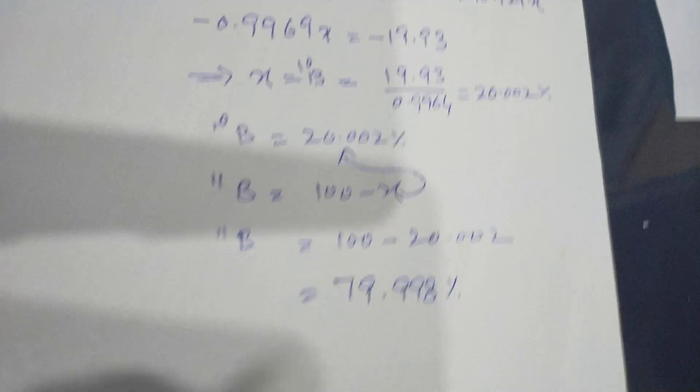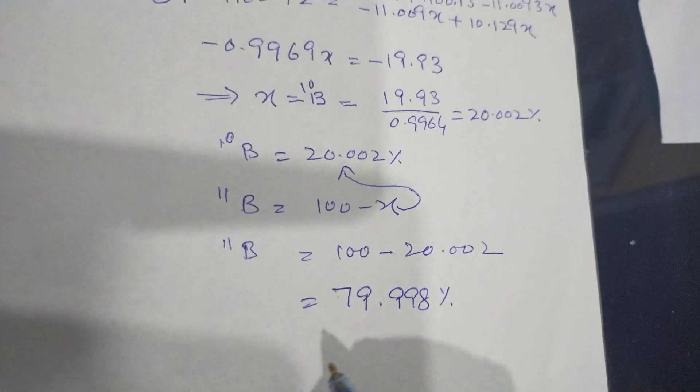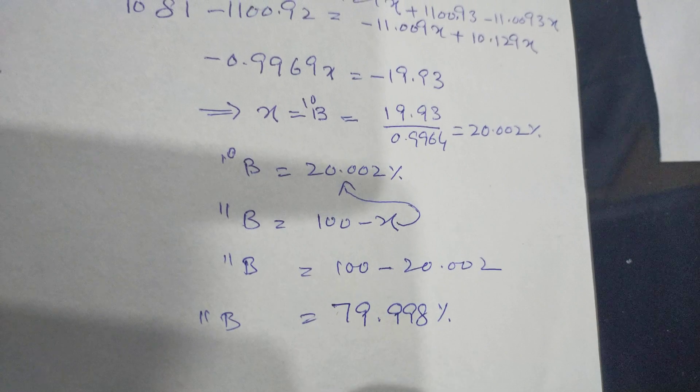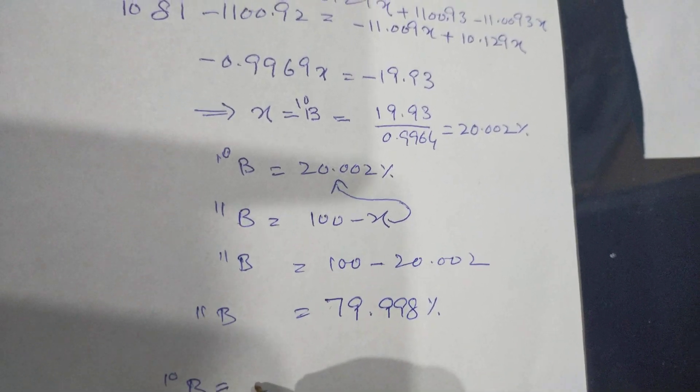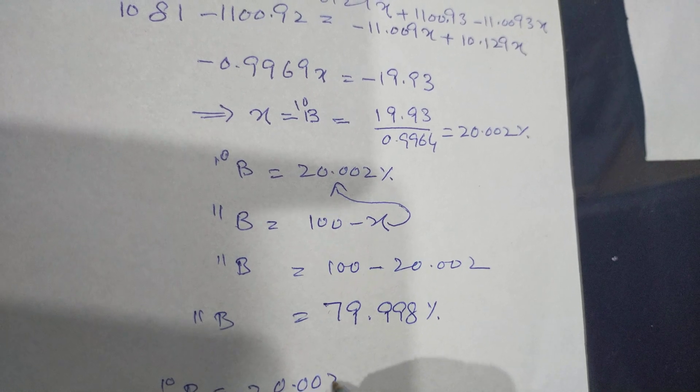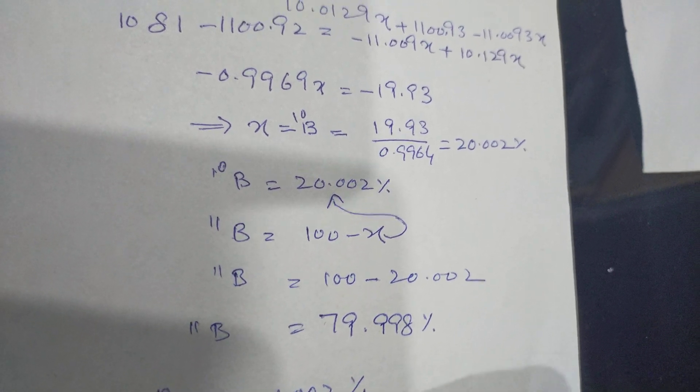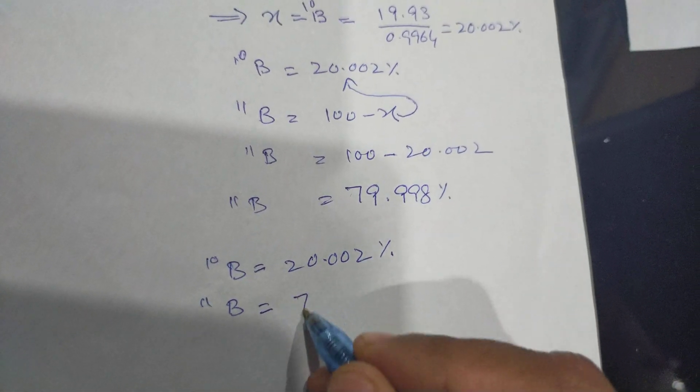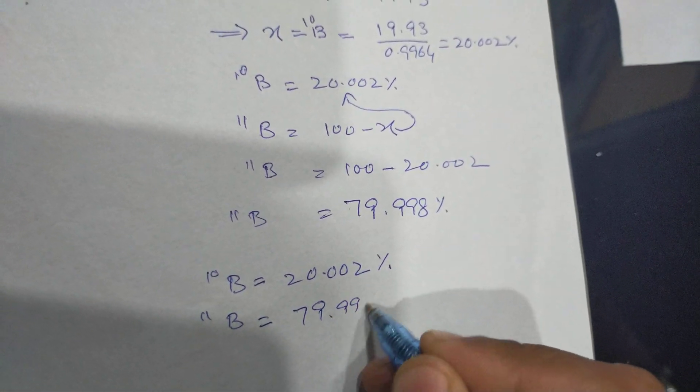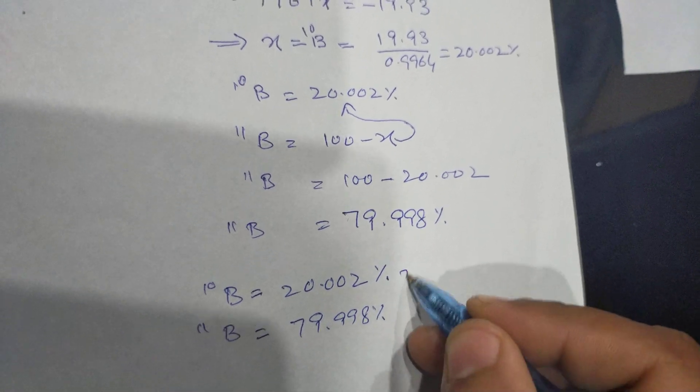So dear friends, it is very simple calculation. Boron-10 isotope has 20.002% relative abundance and Boron-11 has 79.998% relative abundance.